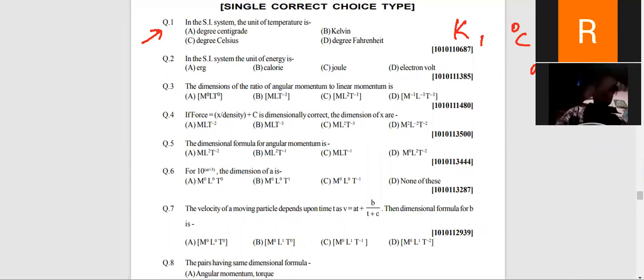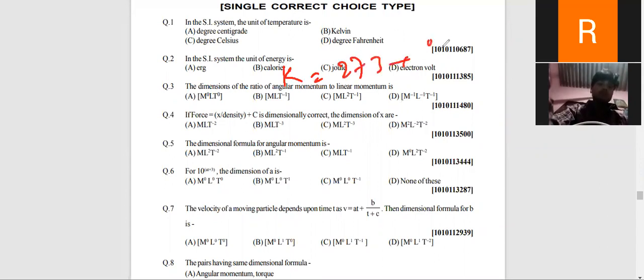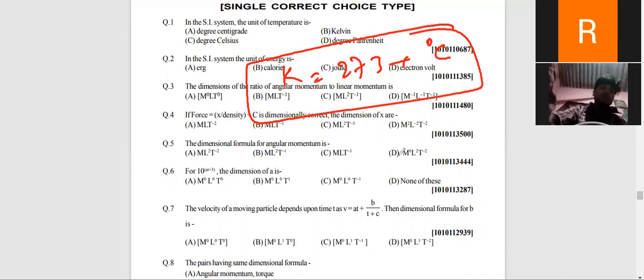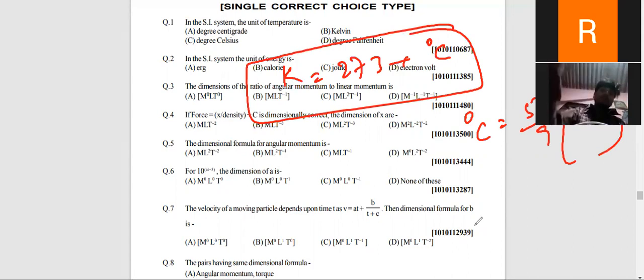We also told you that Kelvin is 273 degrees Celsius. The relation for Fahrenheit is degree Celsius equal to 5 by 9 into F minus 32. In these three, the SI unit of temperature